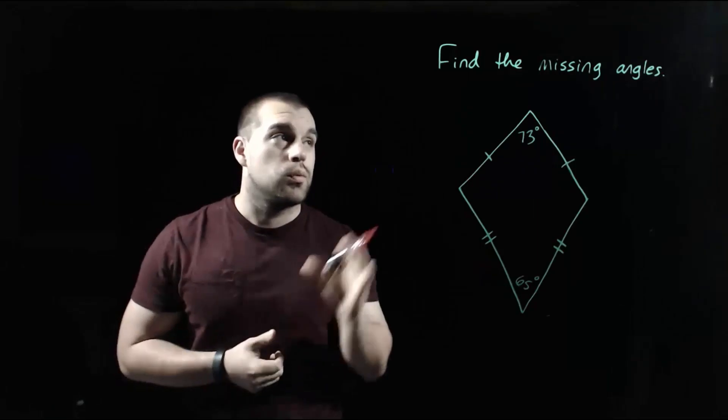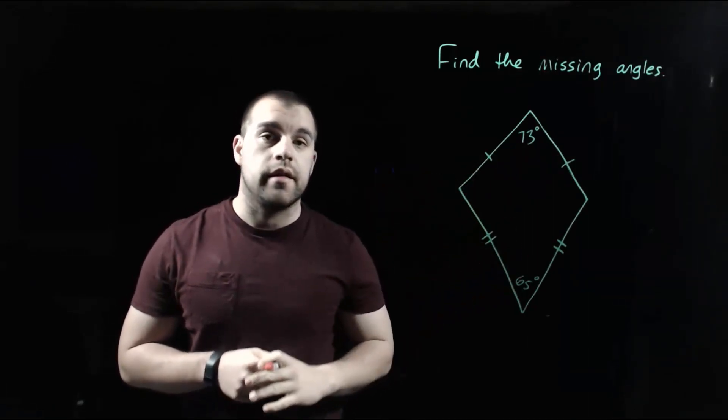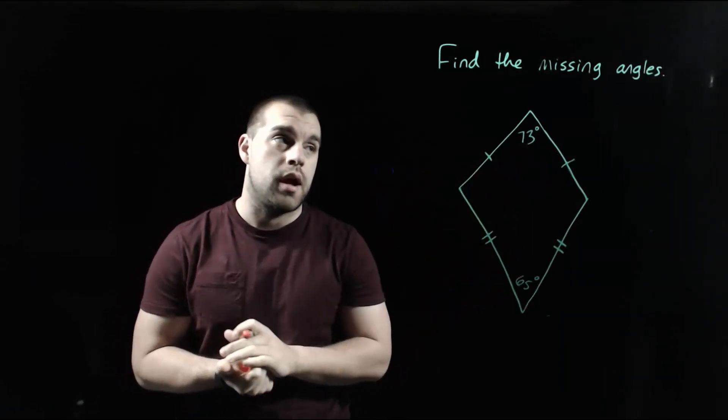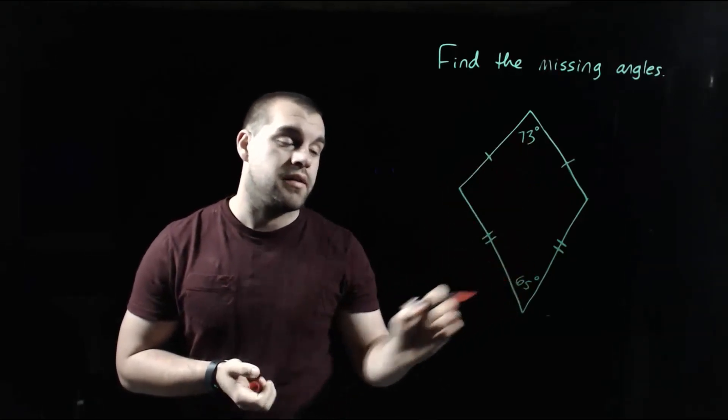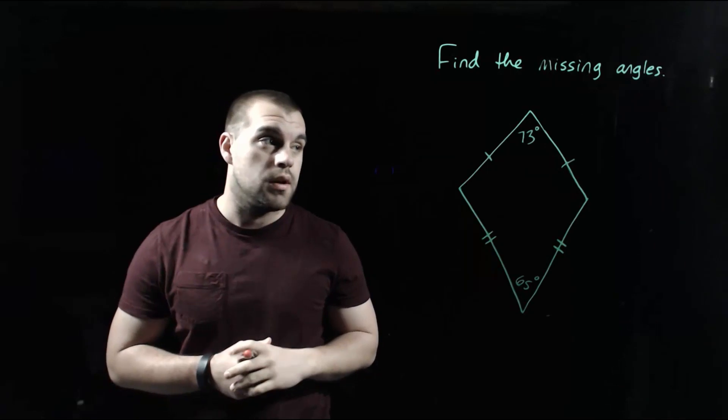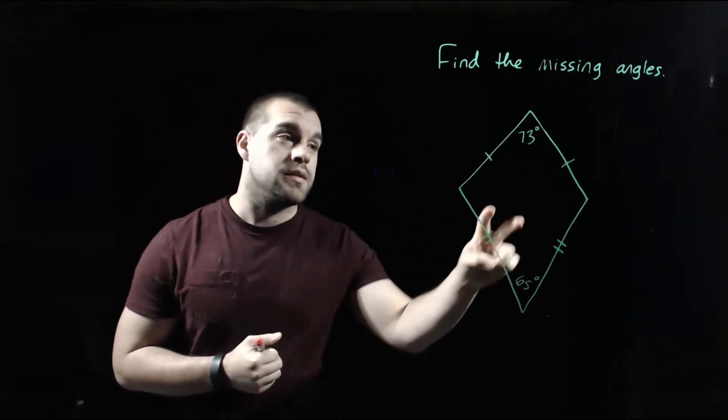So in this picture, we're taking a look at a kite, and we're given two angles within the kite, but we're missing some of the other angles. So what we're given is this top angle is 73 degrees, and this bottom angle is 65 degrees. Now, as we look at how our kite is laid out,